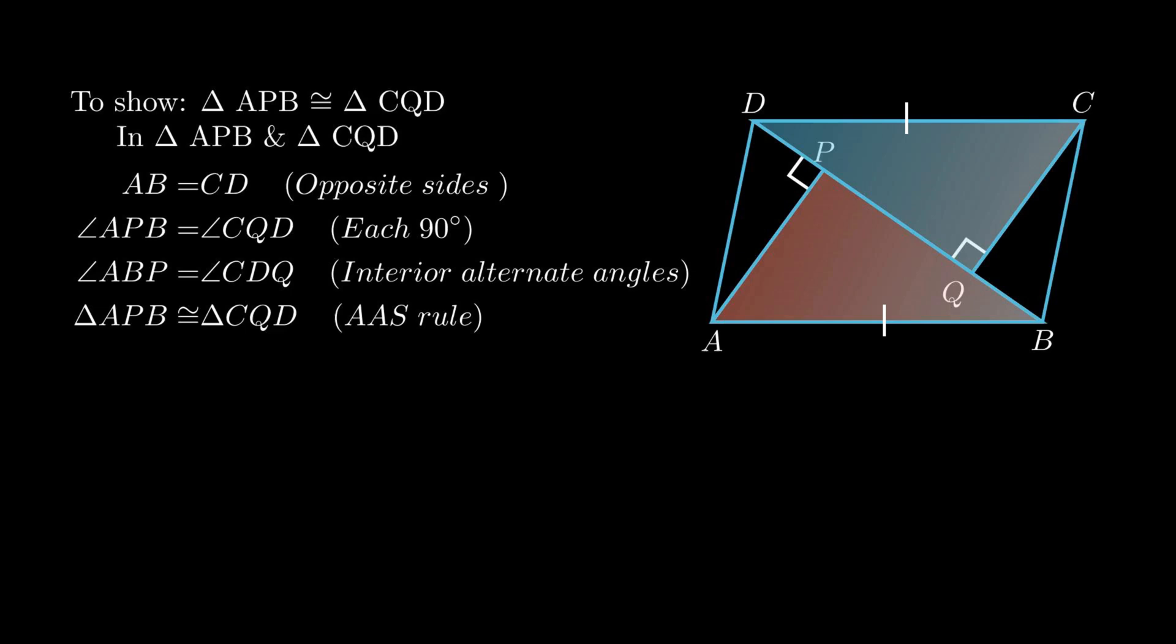Now to prove segment AP equals segment CQ. Since the triangles containing segments AP and CQ are proven congruent, by corresponding parts of congruent triangles, we conclude segment AP equals segment CQ.